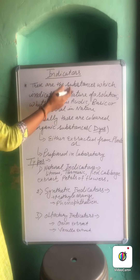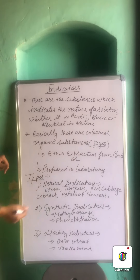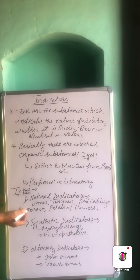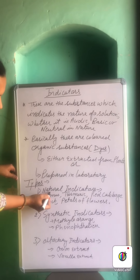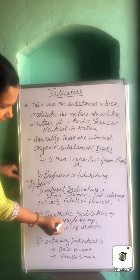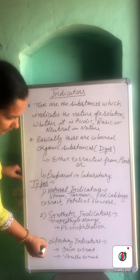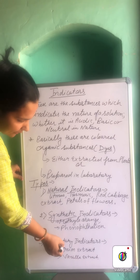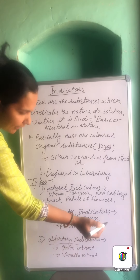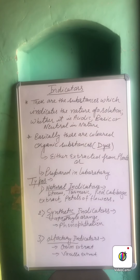So indicators are of three types. First are the natural indicators, second are the synthetic indicators, and the third category is the olfactory indicators.